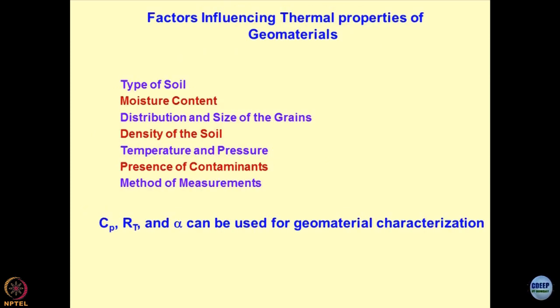Coming to the factors influencing thermal properties of geomaterials — there is a big series of parameters. Number one is the type of soil; the texture of the soil plays an important role. Then is the moisture content — heat migration through air is less compared to heat migration through the liquid phase. Water is a better conductor of heat compared to air, so moisture content in the voids plays a very important role.